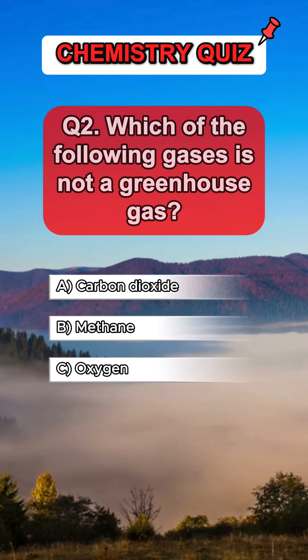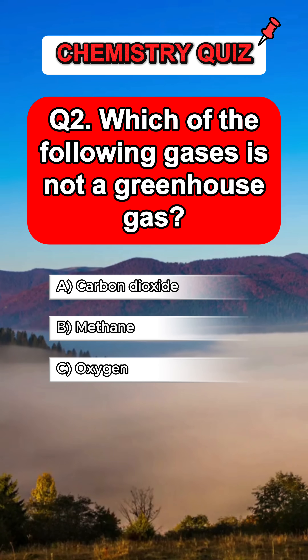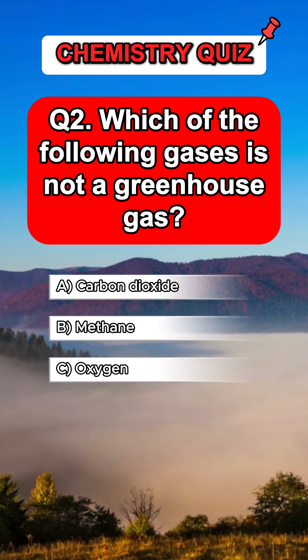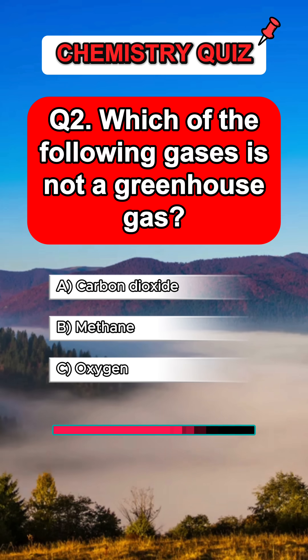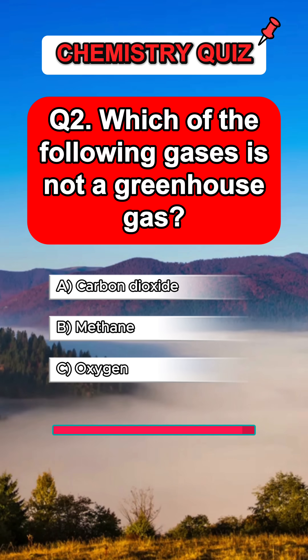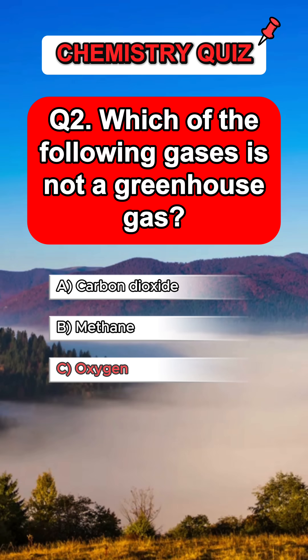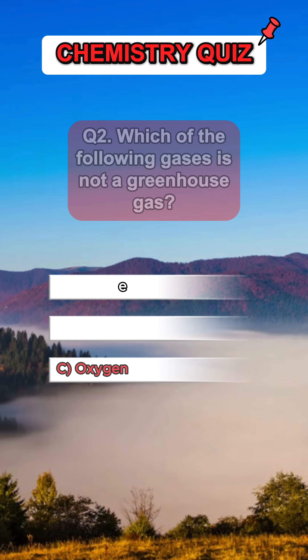Question 2. Which of the following gases is not a greenhouse gas? Answer C. Oxygen.